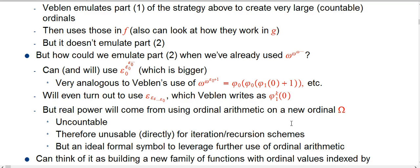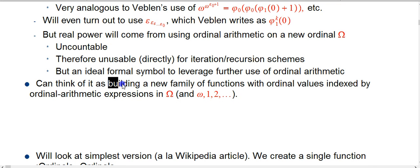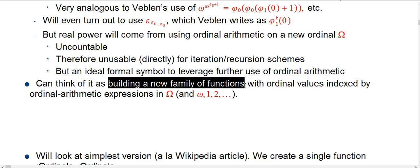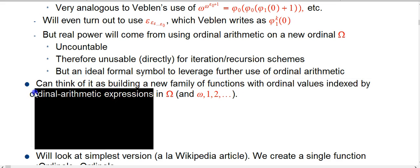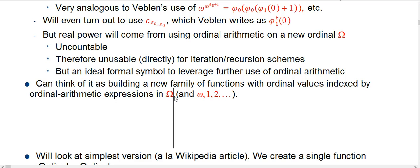But we're going to use it as a formal symbol. That's why we won't need to know too much about cardinality. We'll use it to leverage further use of ordinal arithmetic. And one way to think about it, not the usual way but not horrible, is building a new family of functions from ordinals to ordinals, like the Veblen functions. Instead of indexing by 0, 1, 2, 3, omega, we'll index them by ordinal arithmetic expressions in this new placeholder Ω, and also involving little omega and 1, 2, all the ordinals we've used already.